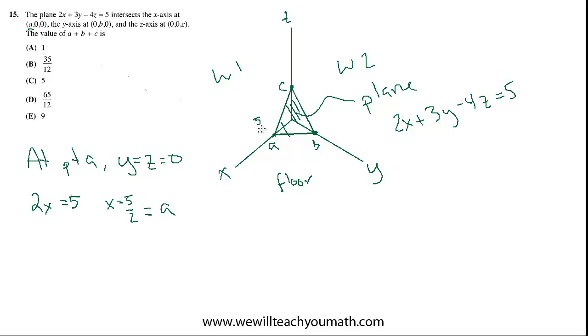And we can use the same procedure to find B and C. At point B, and again, this is the same logic, at point B, x and z equals 0. Because at every point on the y-axis, the x and z coordinate is 0. So B is no different. Which means we can actually plug in 0 for x and z. And we'll get 3y equals 5, which means that y equals 5 thirds. Which means that point B is 5 thirds. B is 5 thirds.